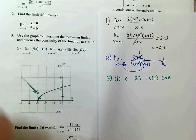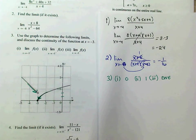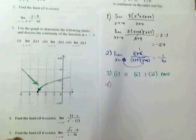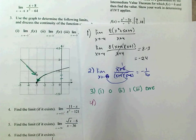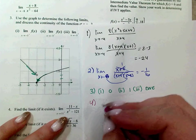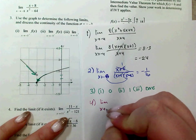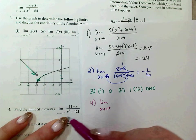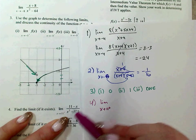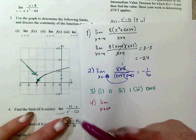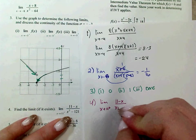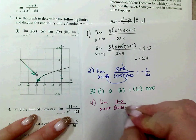Number 4: find the limit as x approaches 11 from the right. Plugging 11 into the top gives 0, and into the bottom gives 0, so there's a hole in the graph, meaning I can simplify algebraically. The numerator is a difference of perfect squares: x plus 11 times x minus 11.